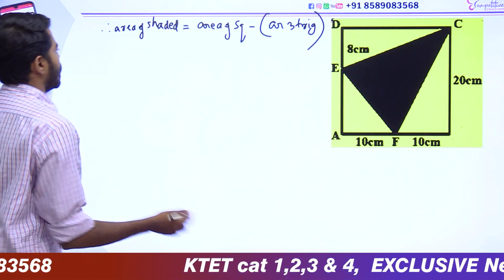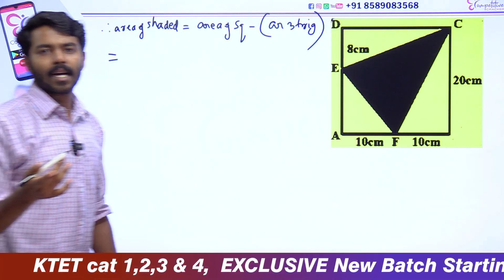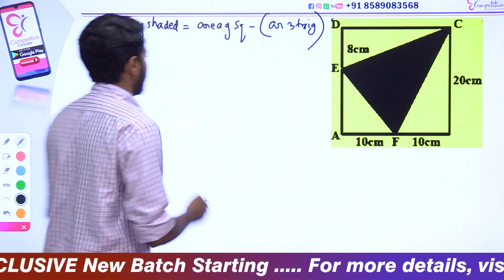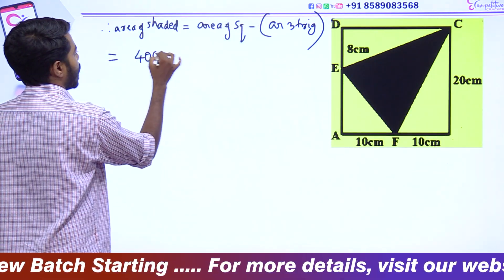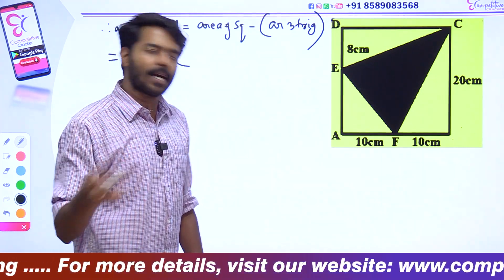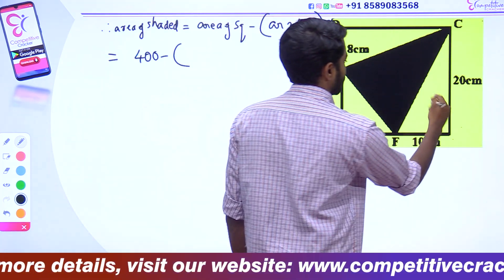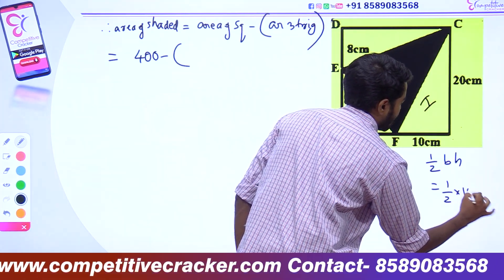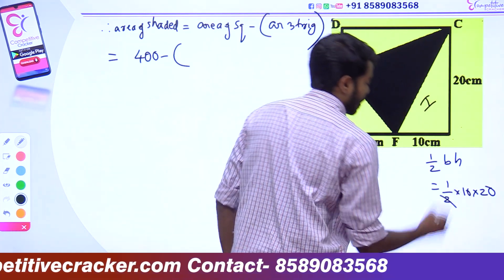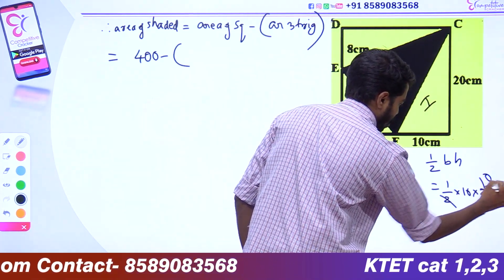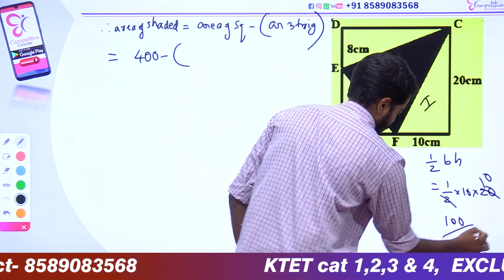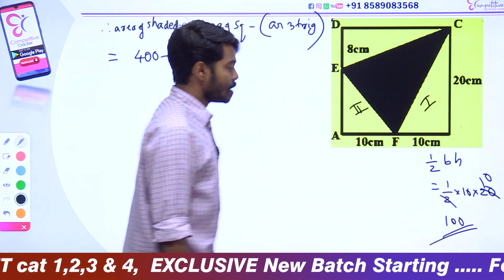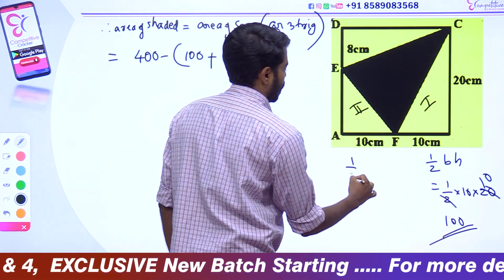400 minus the 3 triangles' areas. We have this triangle — half BH. That's equal to half into base 10 into height. In this case, that is 100. Half BH equals half into base 10 into height. Here, the height is not 10.